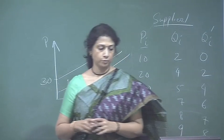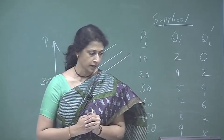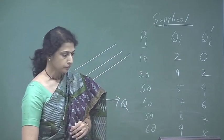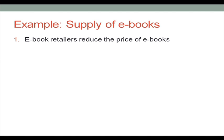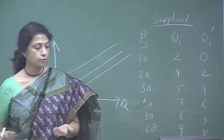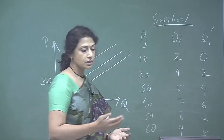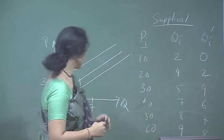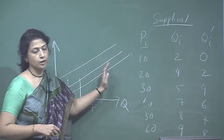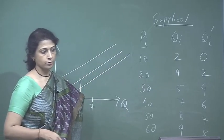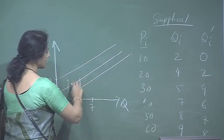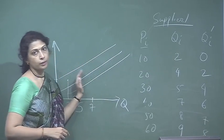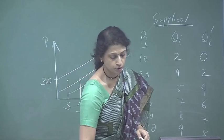Let us take the example of supply of e-books. First: what happens if e-book retailers reduce the price of e-books? Here the price of the e-book itself is changing, so there is no shift of the supply curve — the movement is along the supply curve. If the price of e-books is reducing, the supply of e-books is going to come down.